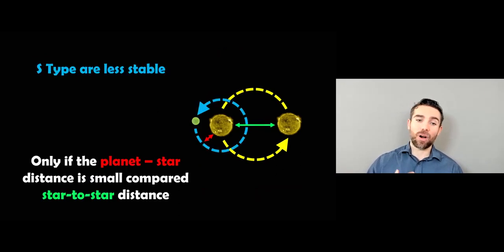Now, the S-type are less stable. And in this configuration here, you want it the other way round. You actually want the planet closest to the first star because otherwise the perturbation from the second star will destabilize it. So actually, it needs to be almost under the influence of the first star more than the second one.